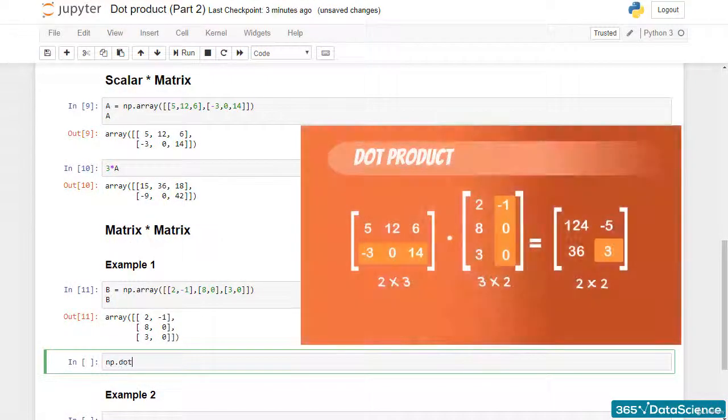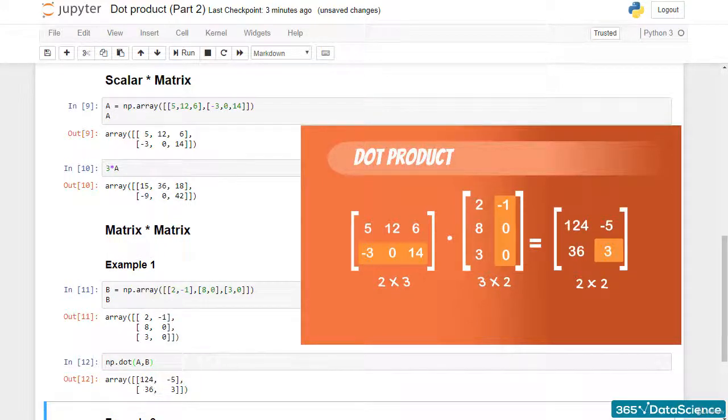In terms of code, things are very simple. We use the method np.dot and the two matrices and immediately get the result. While this lesson is getting a bit long, we should do another example just to solidify the knowledge.